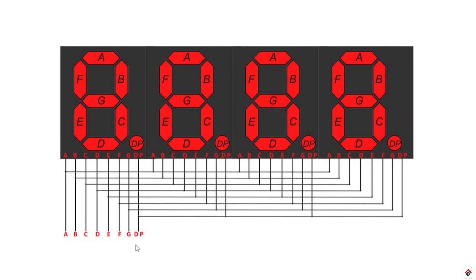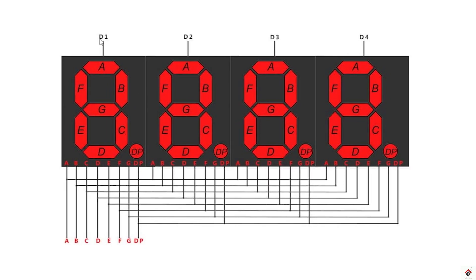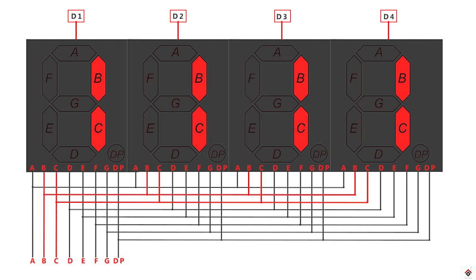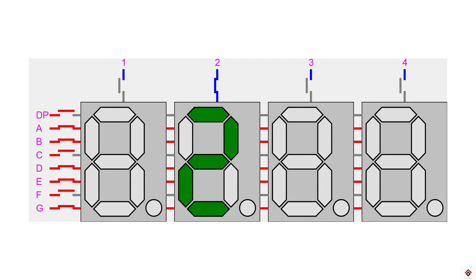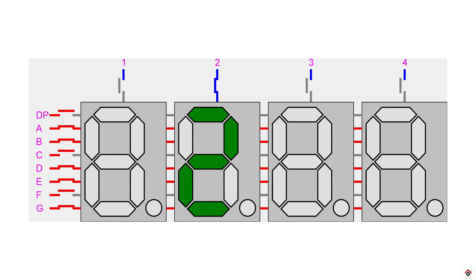The common or ground pin of each display remains separate — these are called digit pins, represented as D1, D2, D3, and D4. Using the segment pins from A to G we can print the required number, and the digit pins D1 to D4 let us decide at which position we want the number to be displayed.